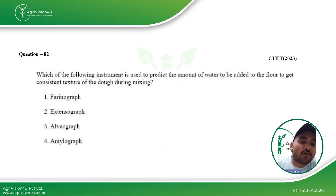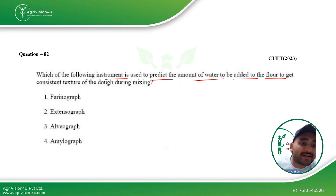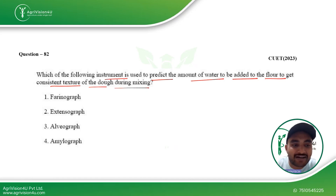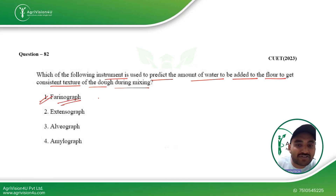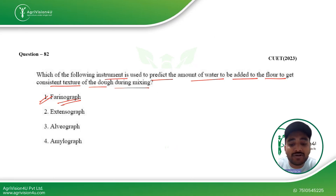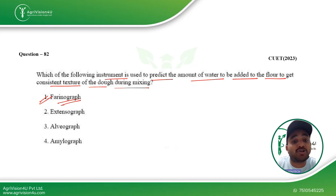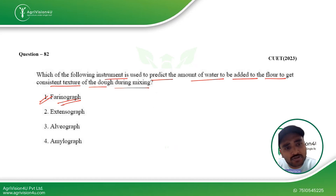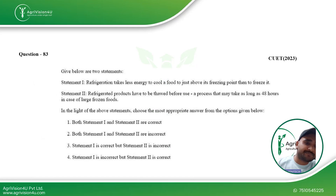Coming to the next question: which instrument is used to predict the amount of water to be added to the flour to get a consistent texture of the dough during mixing? The farinograph is the right answer. Farinograph is used to predict the amount of water that should be added, and it also helps you test which flour is best for your product, since some products need higher moisture and some need lower moisture content in the dough.